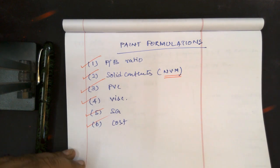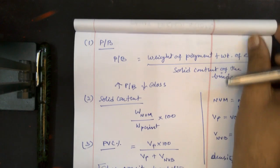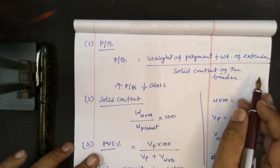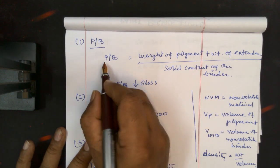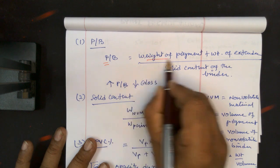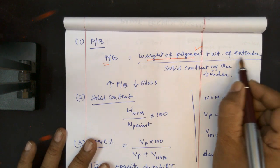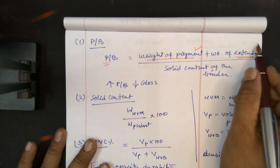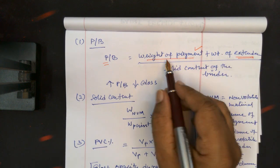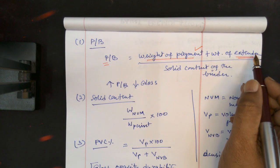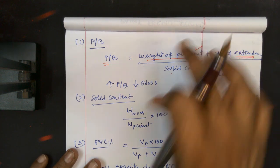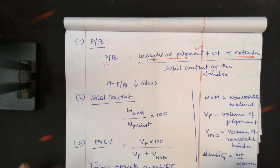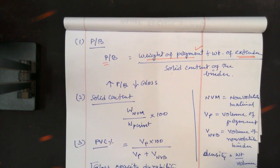Let's discuss one by one. Pigment binder ratio: when I say pigment, we have to consider the weight of the pigment, and it may also contain some extender, so you have to include that too. So it is the total weight of the pigment and extender divided by the solid content of the binder. That gives you the pigment binder ratio. I will work out all these parameters by taking one sample formula.